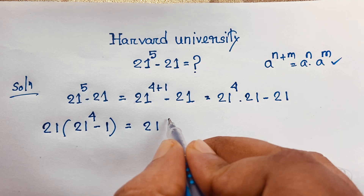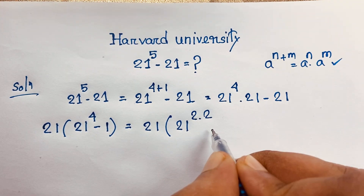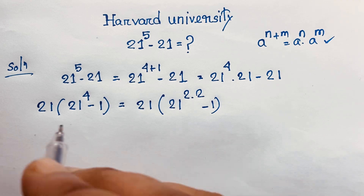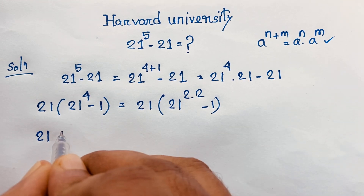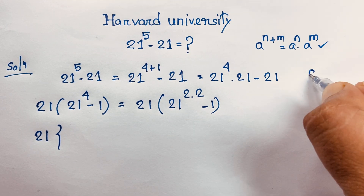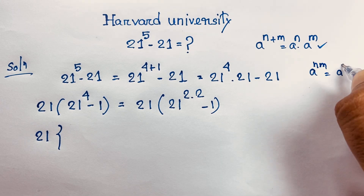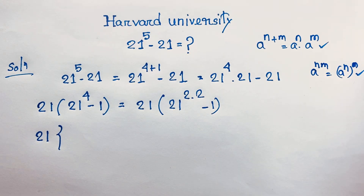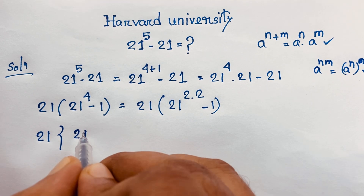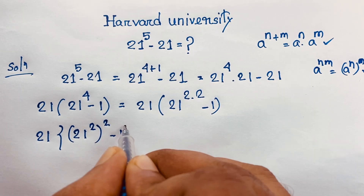So we have 21 times (21 to the power 4 minus 1). Now 21 to the power 4 can be written as 21 to the power (2 times 2). Applying the formula a to the power (n×m) equals (a to the power n) to the power m, this becomes 21 times ((21²)² minus 1²).